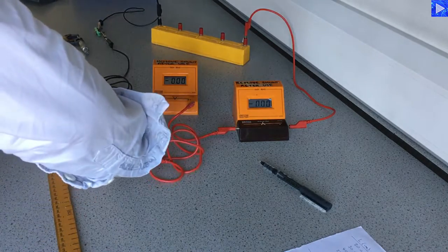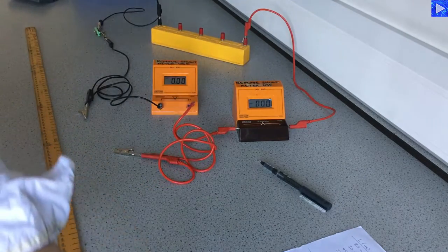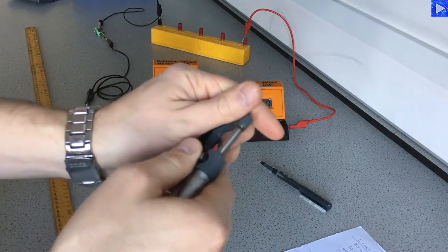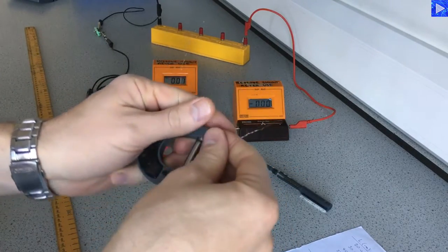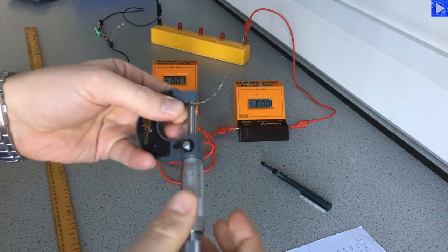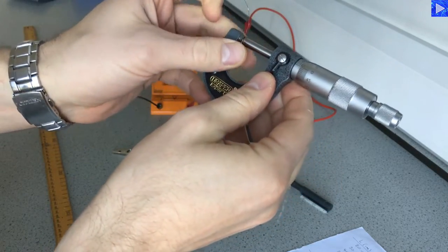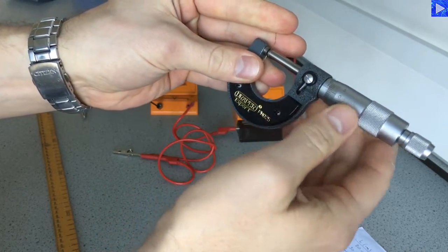So let's get started by measuring the diameter. I am going to measure the diameter at this end of the wire first. I will just go through the procedure for that. So these are the rods, the measuring rods here for the micrometer. So I put the wire between those. This is the thimble.